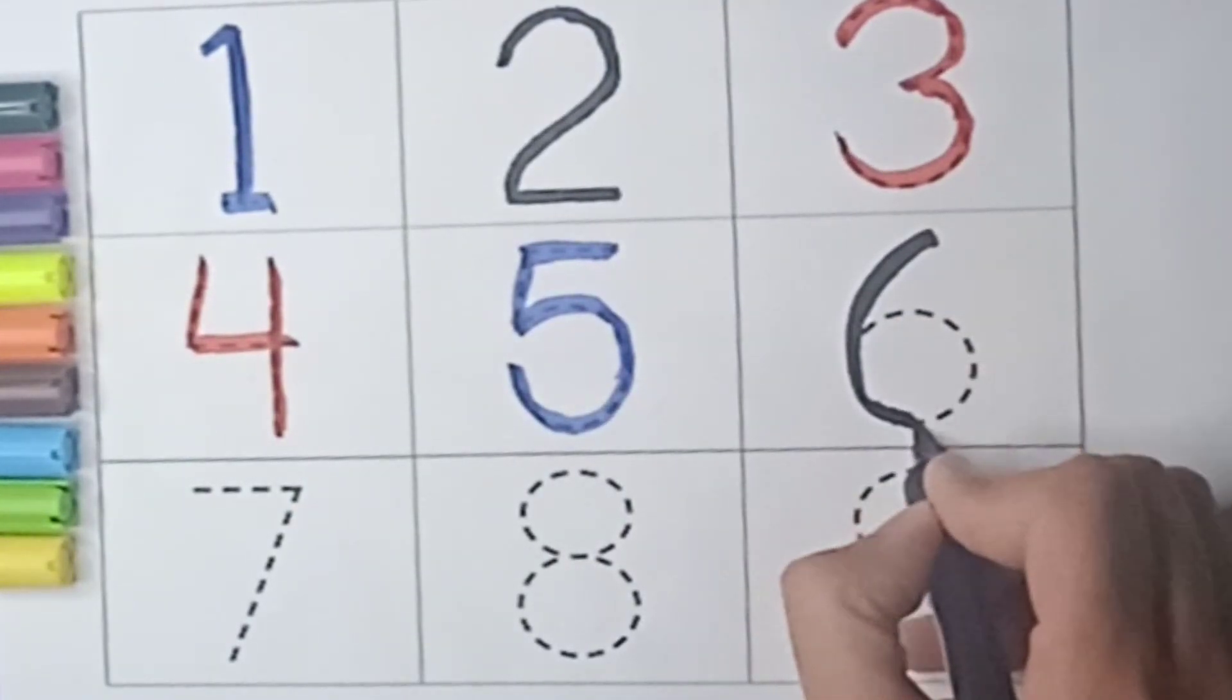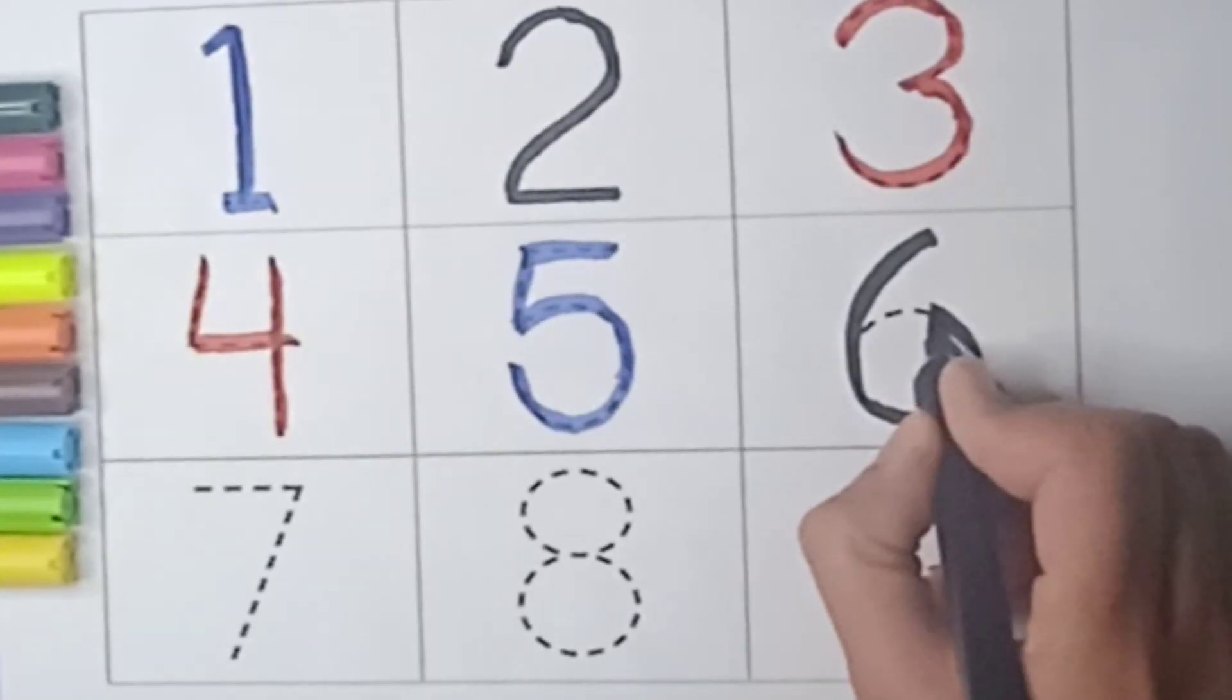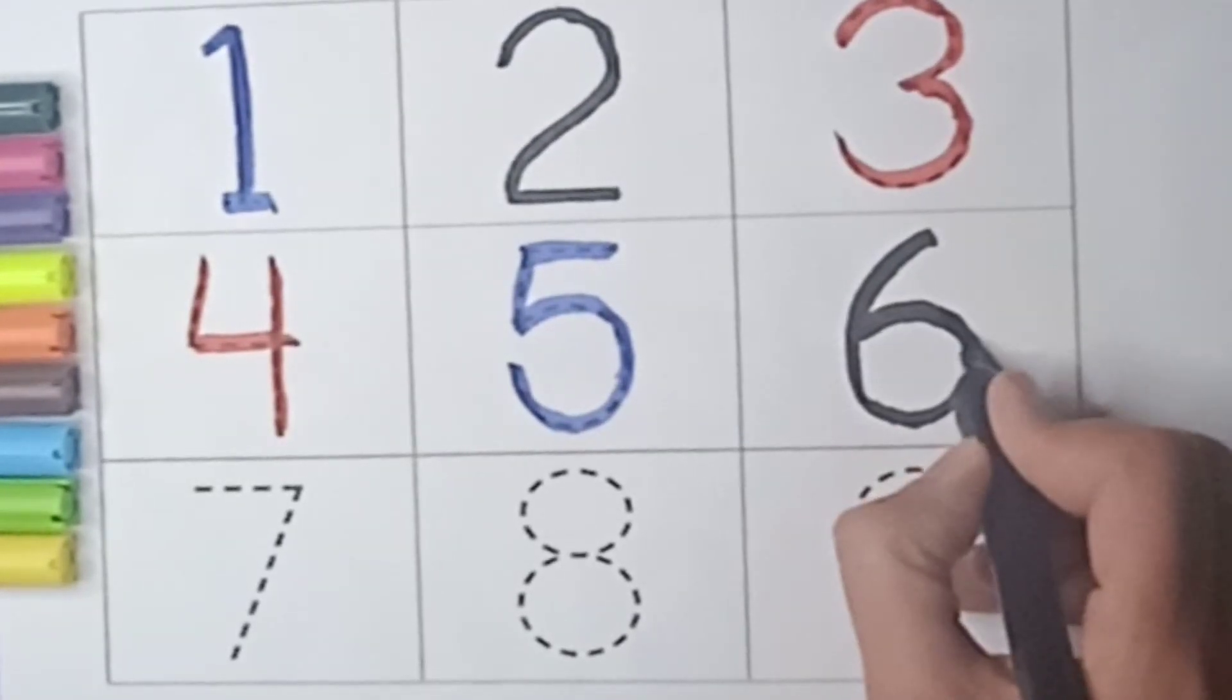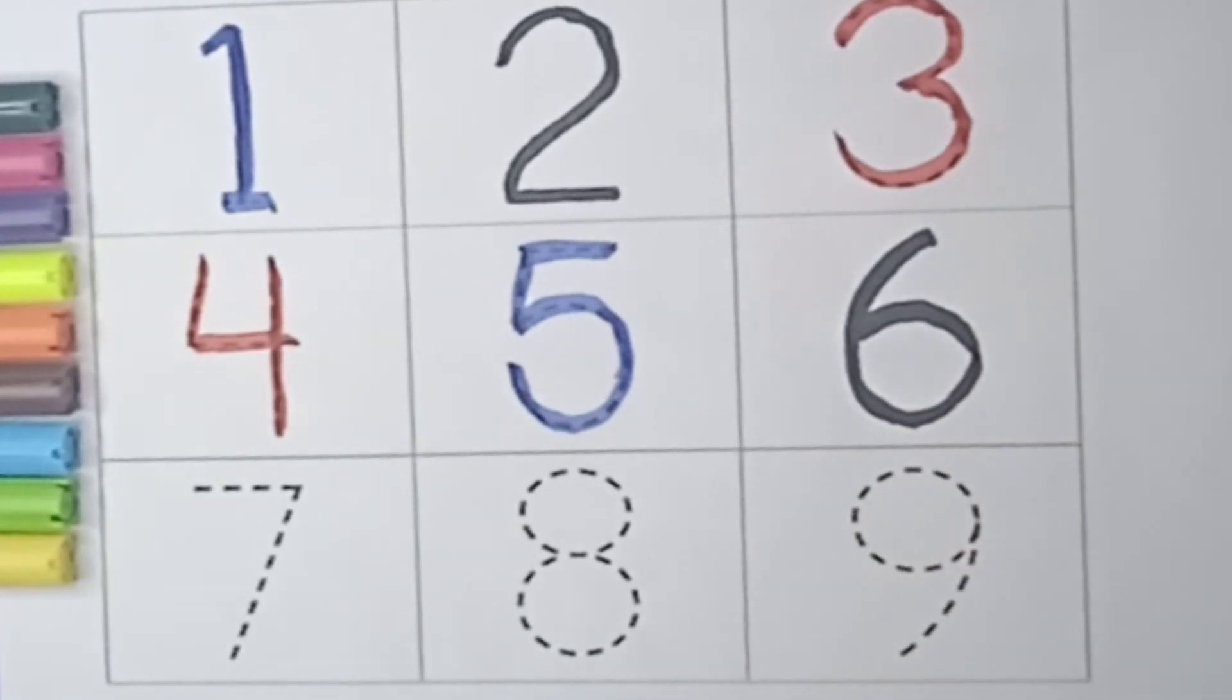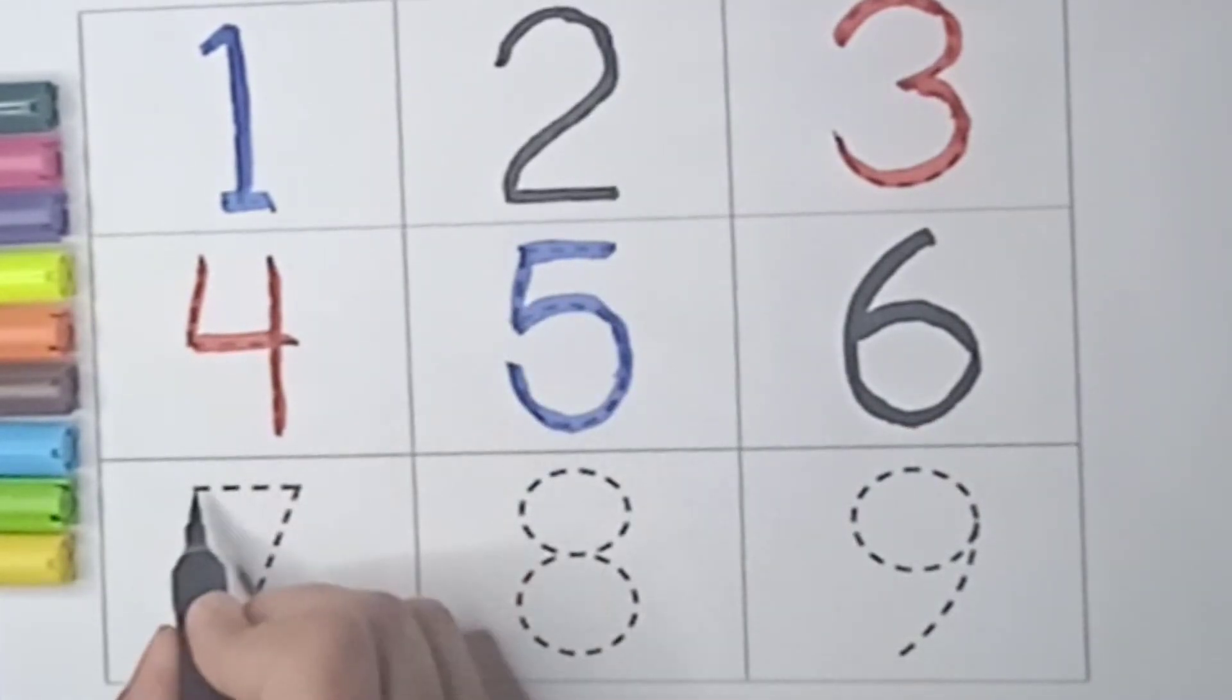Next number is 6, black color. Make a curve, yes like this, and now 6. It's a number 6.